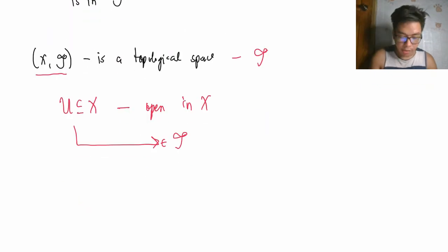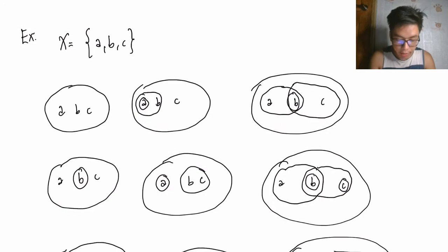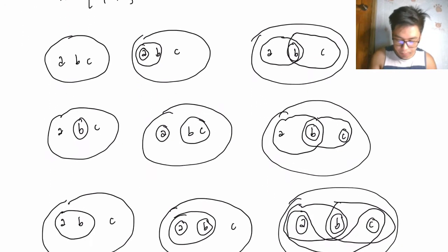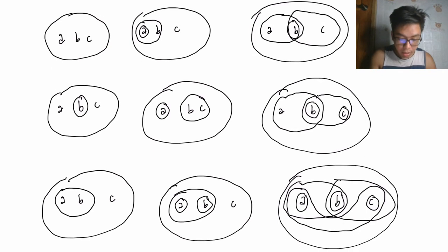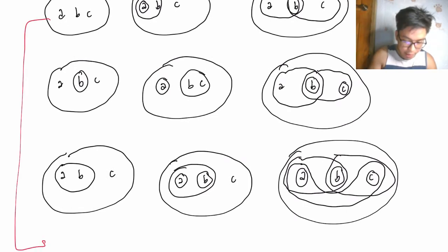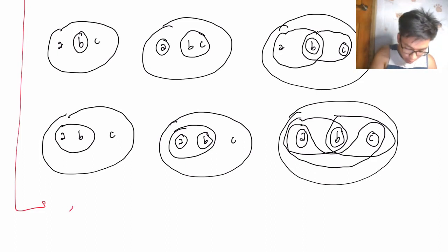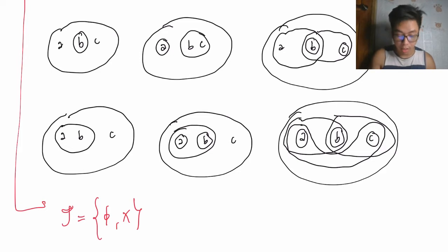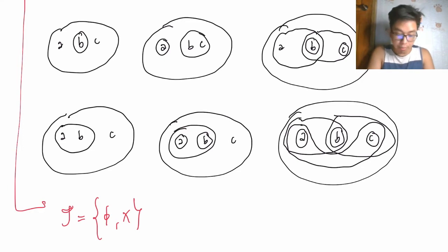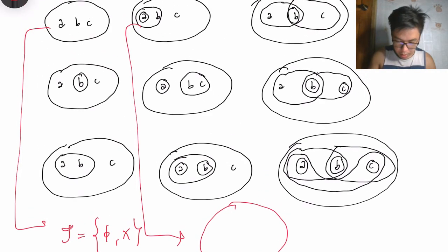Let's consider an example where X contains three elements: {a, b, c}. The figures shown represent nine illustrations for topology. In the first figure, tau = {empty set, X} where X = {a, b, c}. Condition one is satisfied by the presence of the empty set and X. If you take the union of the empty set and X you get X, and the intersection gives the empty set — both are present in tau, so this tau is a topology.